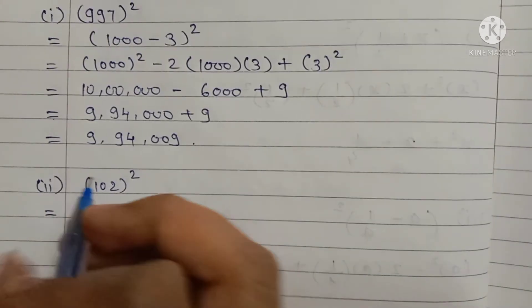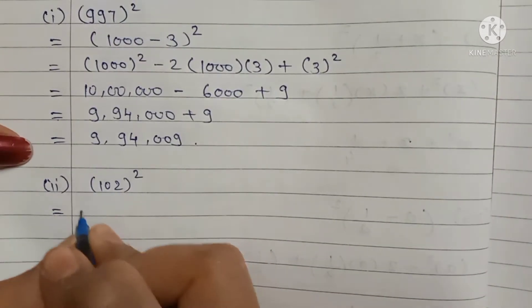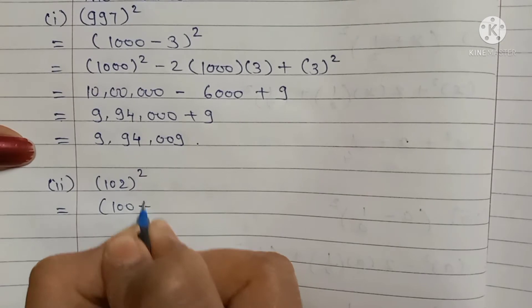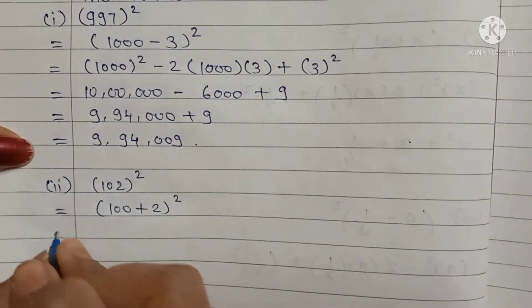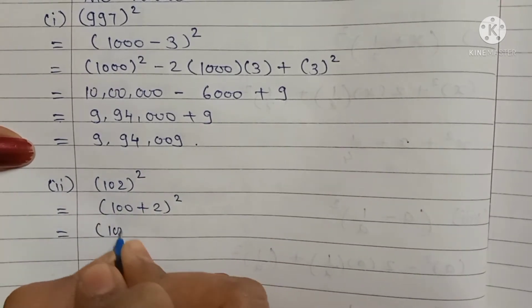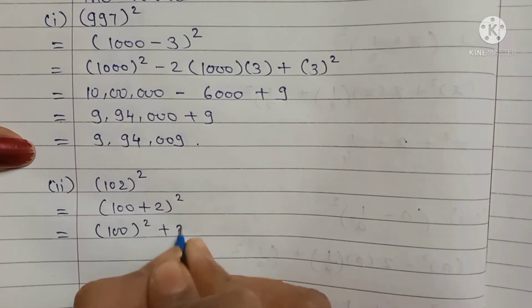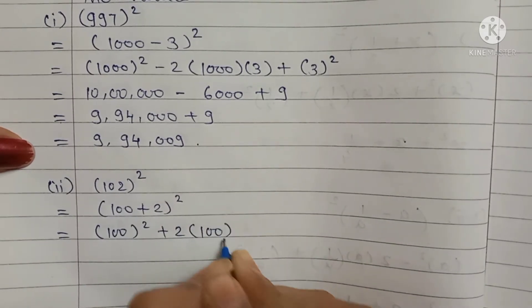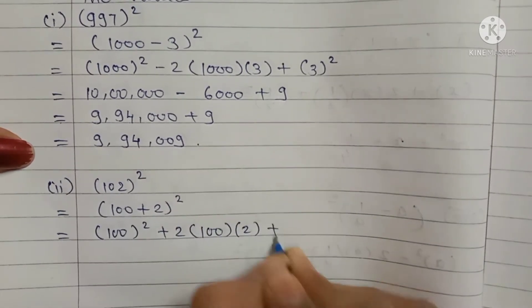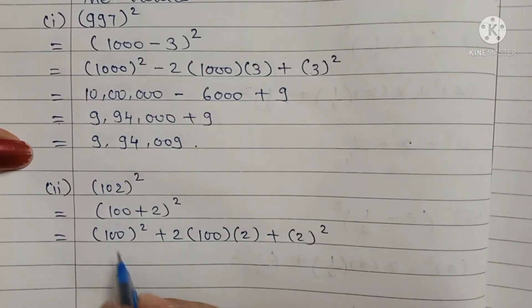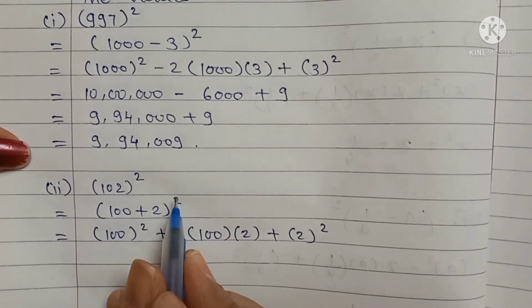Second is 102 squared. How to write 102? 100 plus 2. So 100 plus 2 bracket square equals 100² plus 2 into 100 into 2 plus 2². Here A plus B bracket square formula is used.